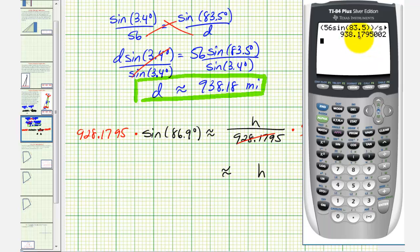And now we'll approximate this product on the calculator. Because we already have this value in the calculator though, we can just press times. Notice how this brings up the previous answer. And now we'll multiply by sine 86.9 degrees, which gives us a height of approximately 936.81 miles.